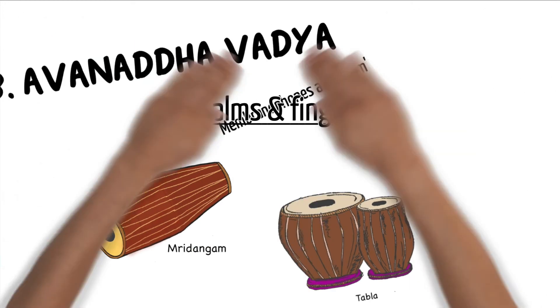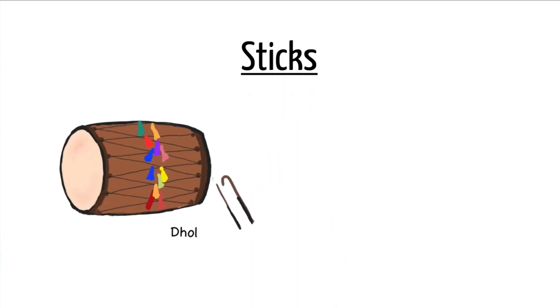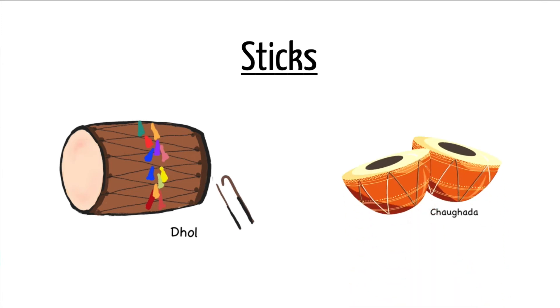On the other hand, we also have drums that can be played with sticks or hammers. These include the dhol and the choghara.